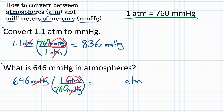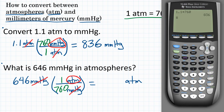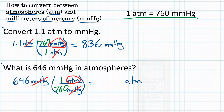Now we can do the math. We start with 646, multiply by the top of our conversion factor and divide by the bottom. The top is one, so we basically just divide by 760. The calculator gives us 0.85. So our final answer is 0.85 atmospheres.